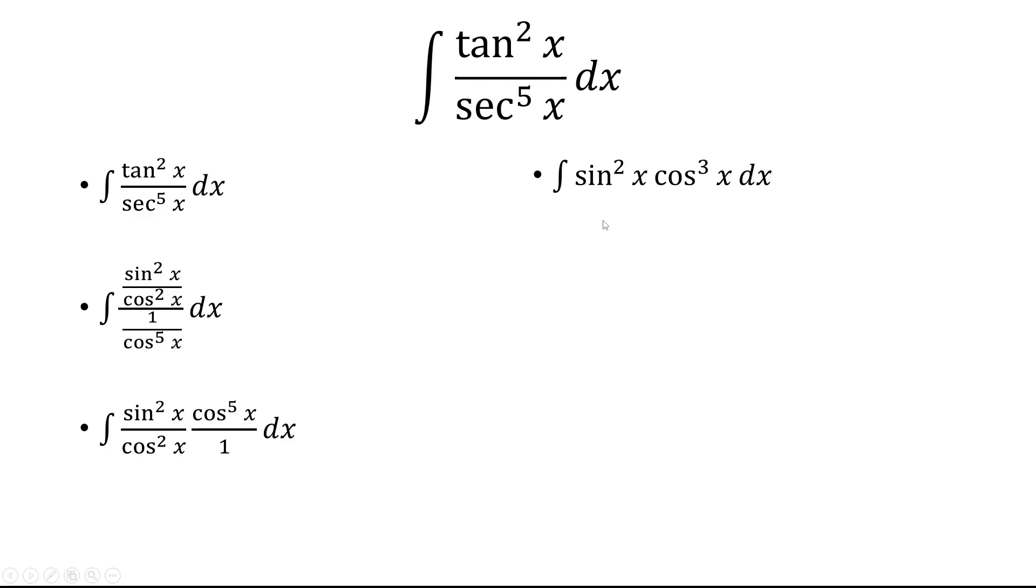And at this point, we're going to split up cosine cubed in terms of cosine squared times cosine. And then cosine squared is one minus sine squared. And so we're going to distribute the sine squared to get sine squared minus sine to the fourth. And then multiply by cosine x dx.